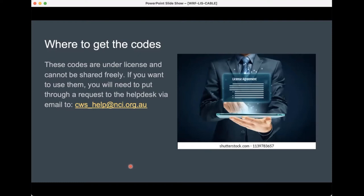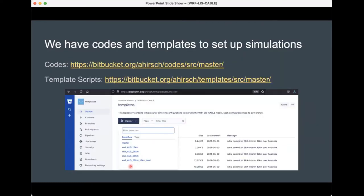We don't just give you model code — we've invested a great deal of effort to create a suite of tools that enable ease of use in setting up the model, setting up your configurations, and just getting on with the science. We have two main Bitbucket repositories: one contains Python codes that help set up all the necessary steps for running this system, and then we have a number of template scripts organized as different branches covering different configurations that we've tested for the CORDEX Australasian domain at different resolutions.